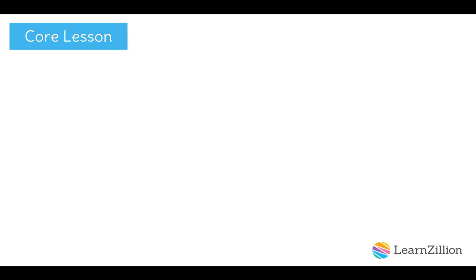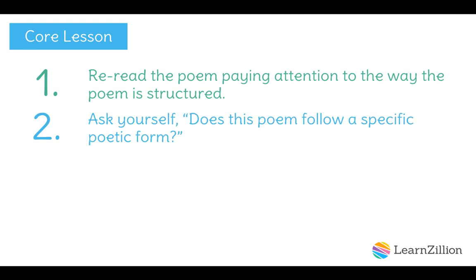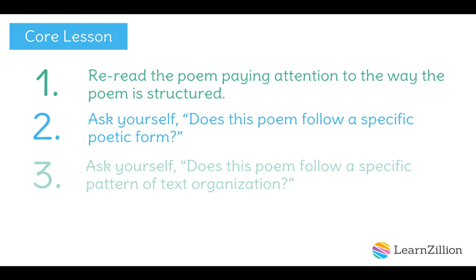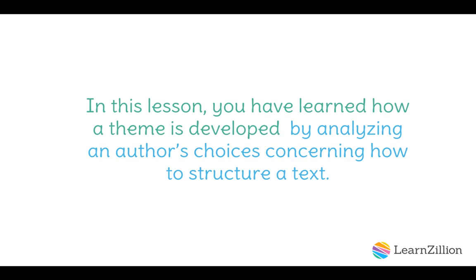Here are the steps we took to answer today's question. First, we re-read the poem, paying attention to the way it was structured. Then we asked, does this poem follow a specific poetic form? Next, we asked, does this poem follow a specific pattern of text organization? And finally, we reviewed our notes, asking what theme these decisions about text structure support. In this lesson, you have learned how a theme is developed by analyzing an author's choices concerning how to structure a text.